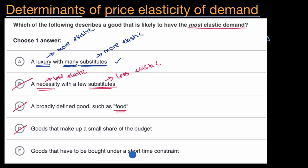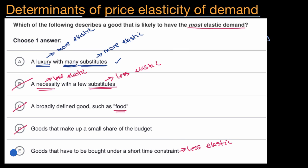Goods that have to be bought under a short time constraint — a good example is that it's raining and people need umbrellas right now, in the next five or ten minutes. They wouldn't necessarily be so sensitive to price, so this is going to be less elastic. If we had a long timeframe, people might be able to shop around for substitutes, and then things might get more elastic — they would be more sensitive to price.